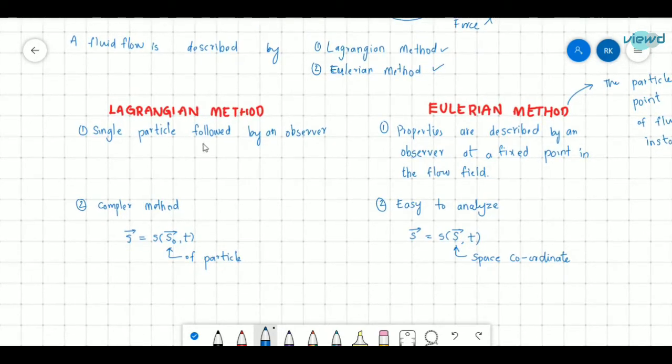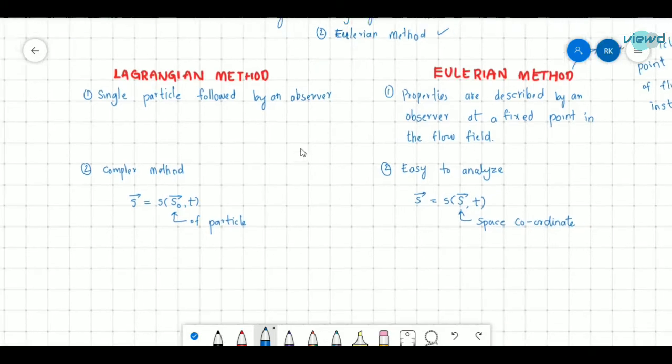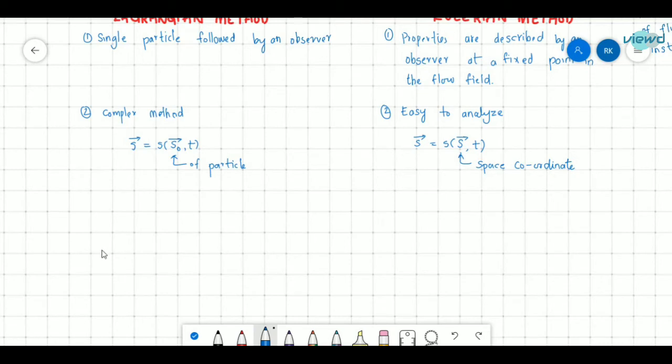In Lagrangian method, a single particle is followed by an observer. Suppose a fluid consists of number of particles. If I consider a single particle and trace its path, suppose for any time t I need to extract these properties. So these properties are defined like this. This s is not displacement, it is just a property. So s is a function of s0, where s0 is a particle, and t is the time that we are considering.